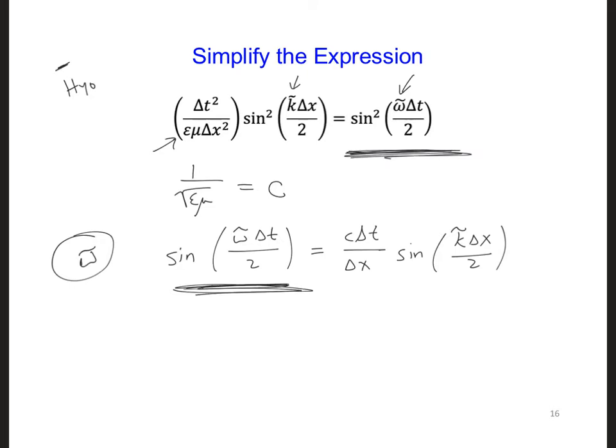So we're going to solve here for omega tilde. If we do that, we're going to get 2 over delta t, and then after taking the arc sine, which I'll just write as sine to the minus 1, c delta t over delta x, and sine k tilde delta x over 2.